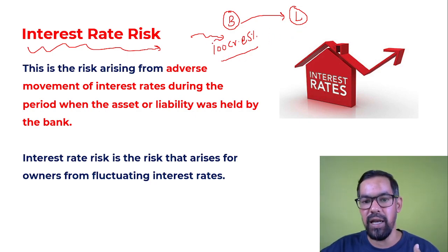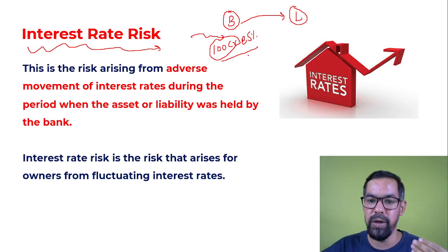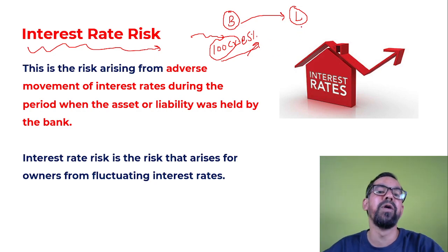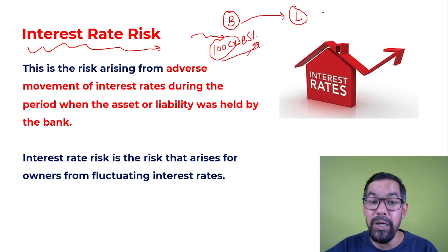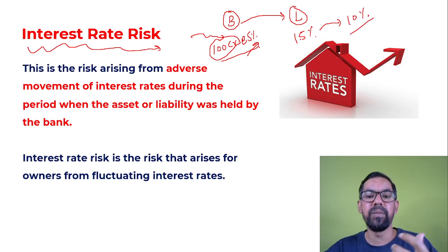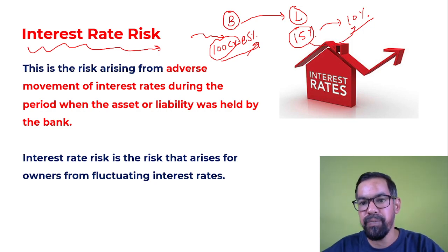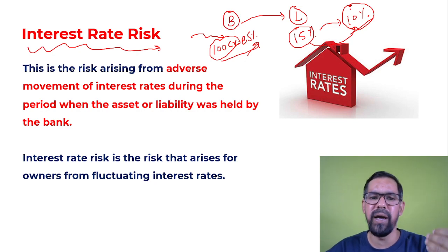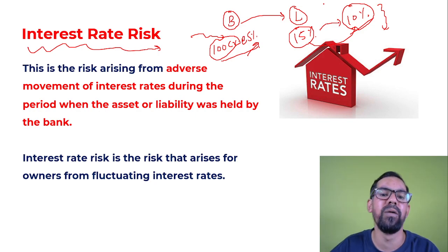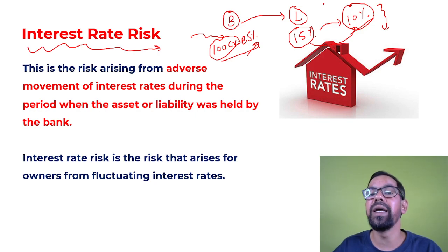After collecting money from investors, the bank lent it to customers. But due to regulatory changes or excess liquidity in the market, the interest rate came down from 15% to 10%. Previously the lending rate was 15%, but now it has gone down to 10%. Notionally that particular bank made a loss of 5% from this situation. This is known as interest rate risk — risk arising from adverse movement of interest rates during the period when the asset or liability was held by the bank.